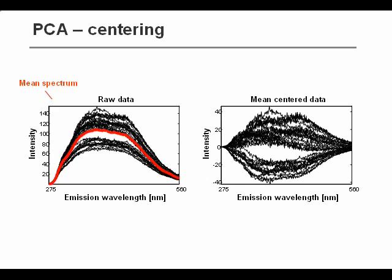First, we do a centering. And centering just means subtracting the average from every column. That means subtracting the average spectrum from the data. And here you can see the raw data and the centered data. The average of every column in the centered data would now be zero.